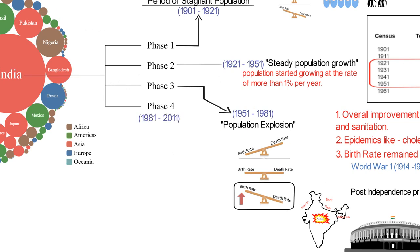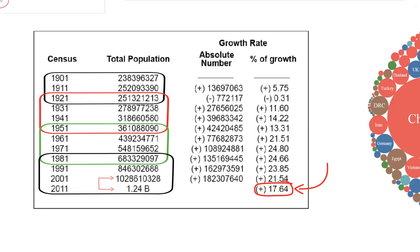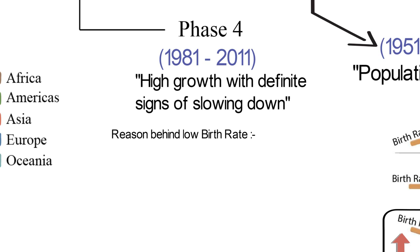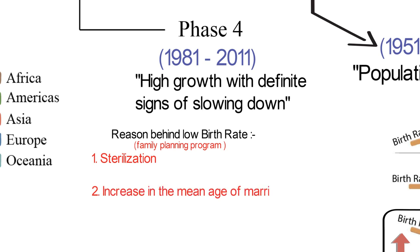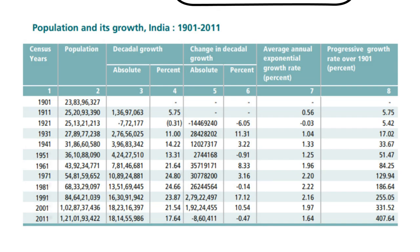The last and fourth phase is from 1981 to 2011. This period is referred to as the period of high growth with definite signs of slowing down. Although the population growth rate was still very high, it started declining after 1981, simply because the birth rate was going down. The drop in birth rate largely happened through a family planning program — i.e., sterilization — then an increase in the mean age of marriage, improved quality of life, and particularly education of females. The population growth rate declined from 2.2% in 1971, to 2.14% in 1991, further to 1.95% in 2001, and finally to 1.64% in 2011.